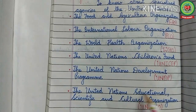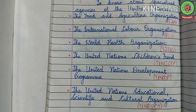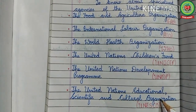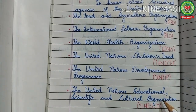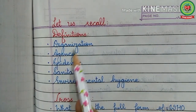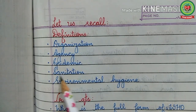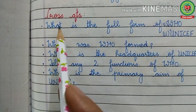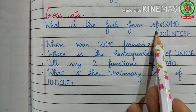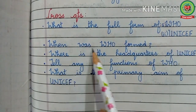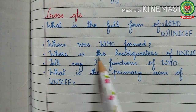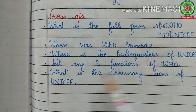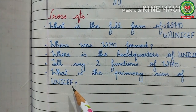Today we will be discussing the United Nations Development Program (UNDP) and the United Nations Educational, Scientific and Cultural Organization (UNESCO). But before starting these two topics, let us recall the cross question answers and definitions related to the previous topics — organization, agency, epidemic, sanitation, environmental hygiene. Answer these cross questions: What is the full form of WHO and UNICEF? When was WHO formed? Where is the headquarters of UNICEF?